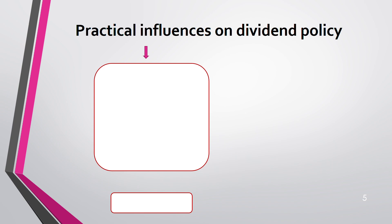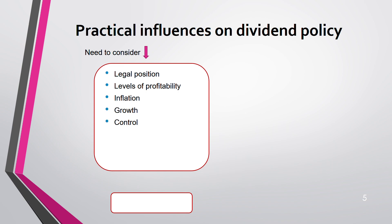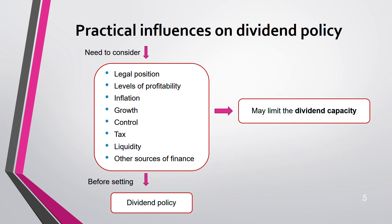There are practical influences on dividend policy you need to know. Number one: legal position. Number two: level of profitability — higher profitability means more dividend capacity. Then inflation — check whether your dividend increase is in line with inflation. Also consider growth, growth control, tax, liquidity, and other sources of finance. All these factors will limit your dividend capacity.